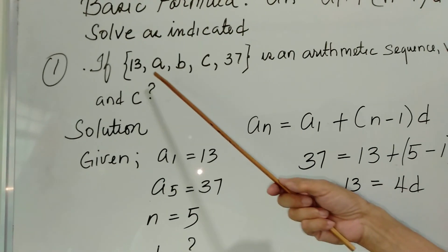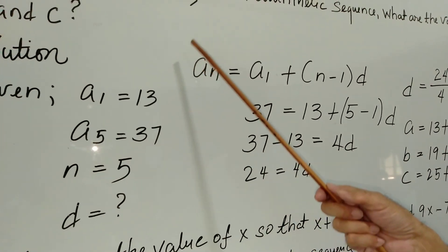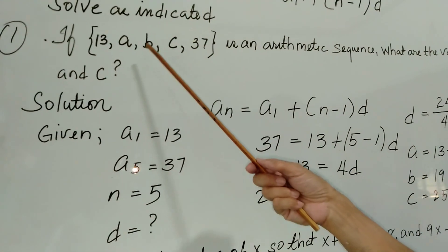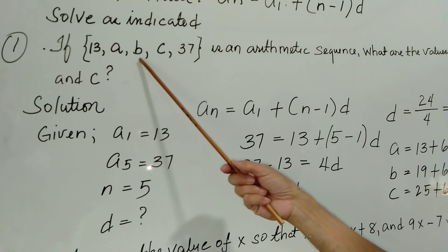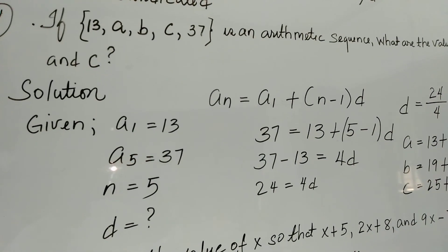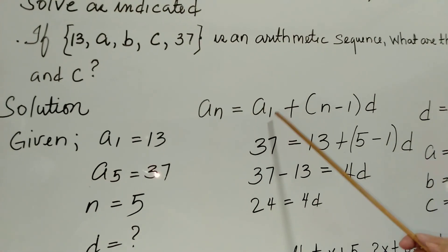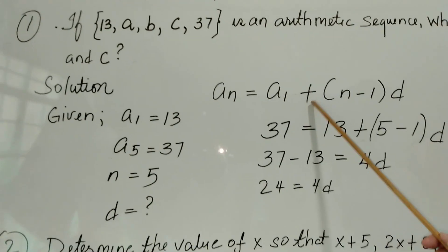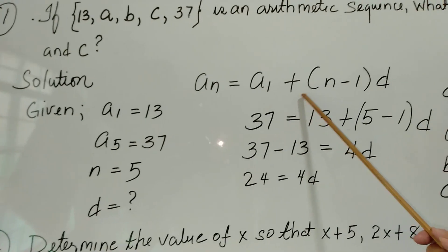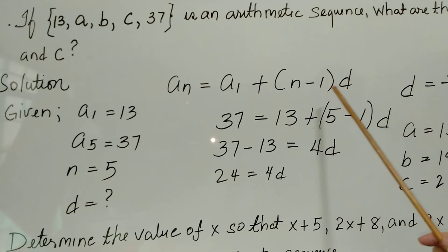So first we're going to write the givens: a sub 1 is 13, a sub 5 — the last term — is 37, and n is the number of terms, which is 5. And d is unknown. After finding d, we will be able to determine the values of a, b, and c.